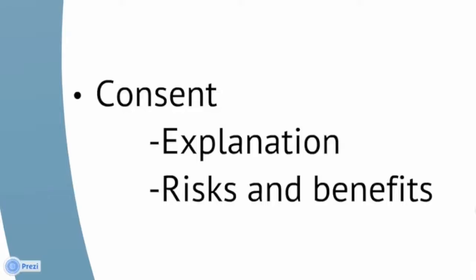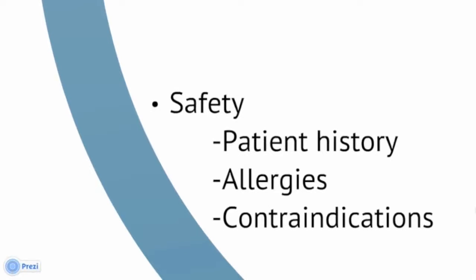You should also describe the potential risks, for example infection and expulsion, along with the benefits such as emptying the bladder or measuring urine output. After this, check the patient's understanding and ask if they are happy for you to continue. Once you have gained consent, make sure that you are safe to proceed by asking the patient about their relevant past medical history such as urinary tract surgery. Allergies specific to this procedure include latex and previous reactions to the Instilagel local anaesthetic. It is important to inquire about potential contraindications to the procedure, for example urethral trauma or recent haematuria.